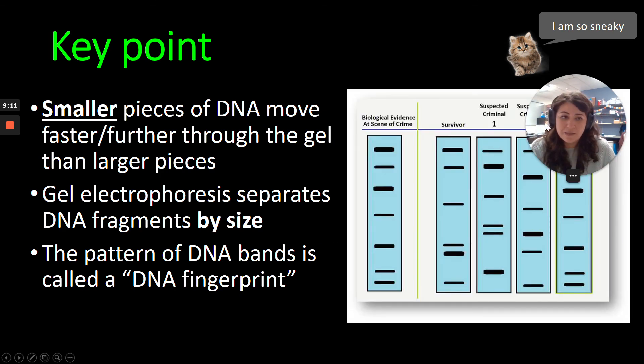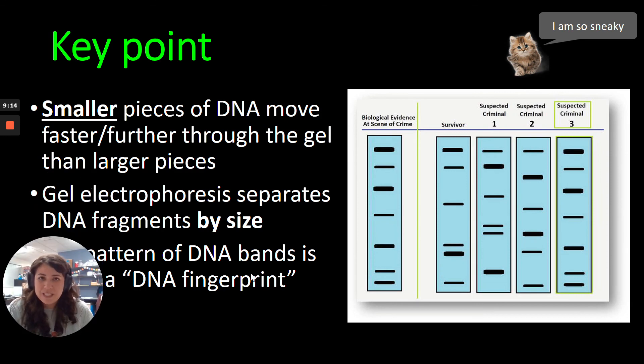So it might look something like this. So people use these in crime, in forensics a lot. So let's look at here. We have a DNA fingerprint of some evidence left at a crime scene. And then we have DNA evidence from the survivor and from three criminals. And if you look, criminal three has the exact same DNA fingerprint as the evidence left at the crime scene. So everyone has unique DNA sequences, which means everyone's going to have a unique DNA fingerprint. So that's pretty strong evidence that criminal three was at the crime scene.